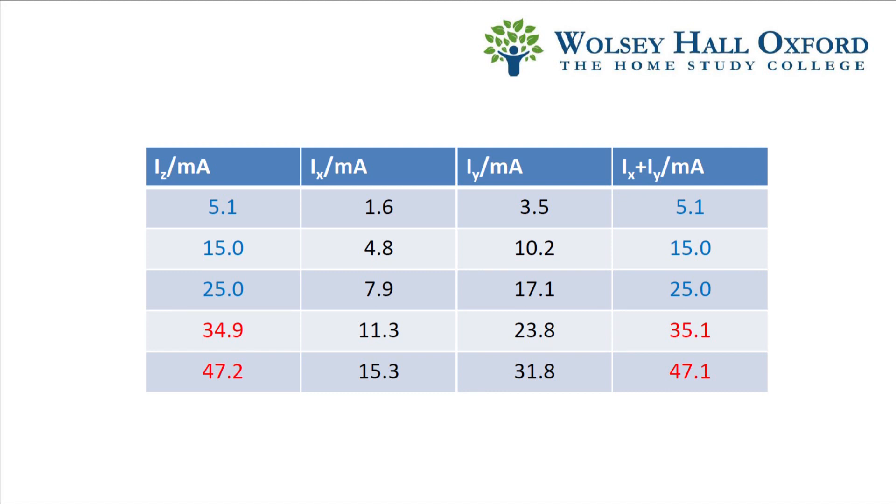You'll notice that for the results highlighted in blue, IX plus IY equals IZ, which is what we wanted. The ones highlighted in red are a little off. This is a perfect example of the problems with experimental error and instrument precision.